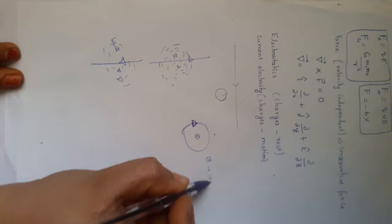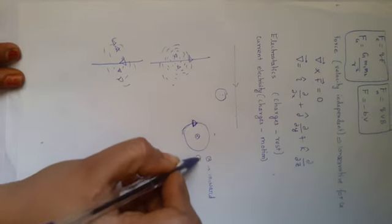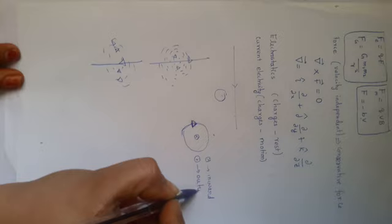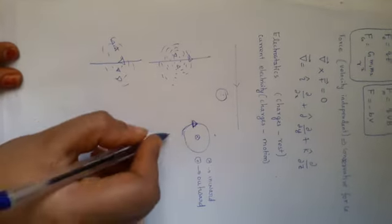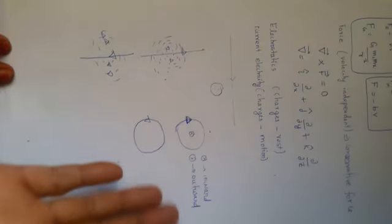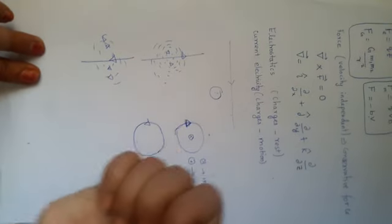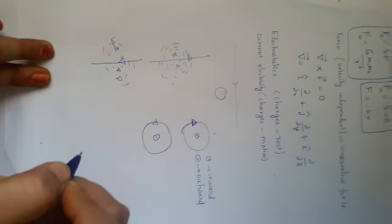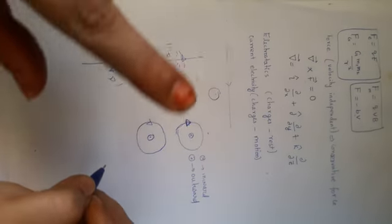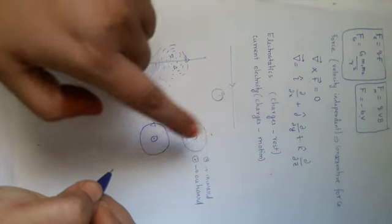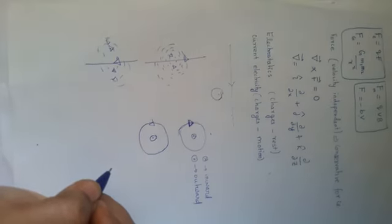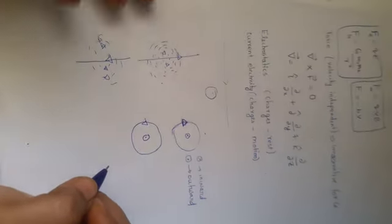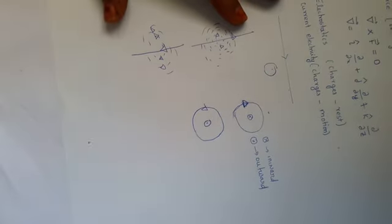For a clockwise direction, the corresponding magnetic field is going inside at the center. As you all know, a cross (×) means it is going inward and a dot (•) means it is coming outward. For an anti-clockwise direction, the field is coming outside. So for clockwise the field goes inside, and for anti-clockwise it comes outside.